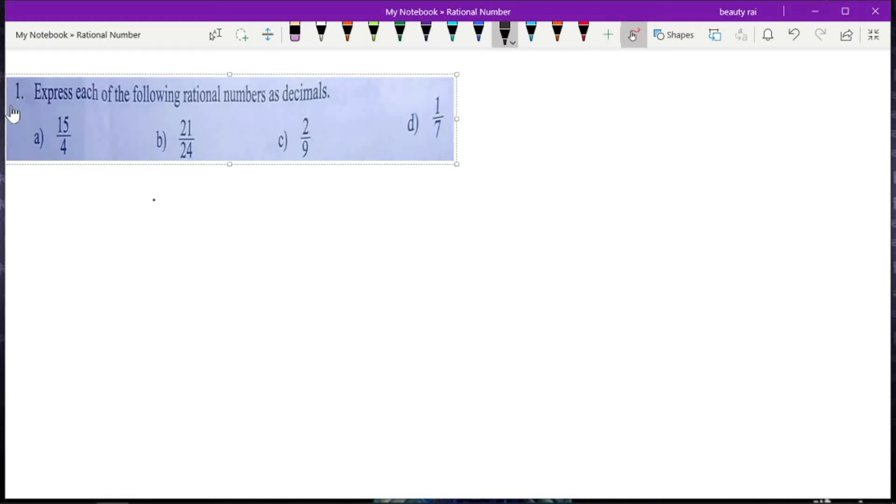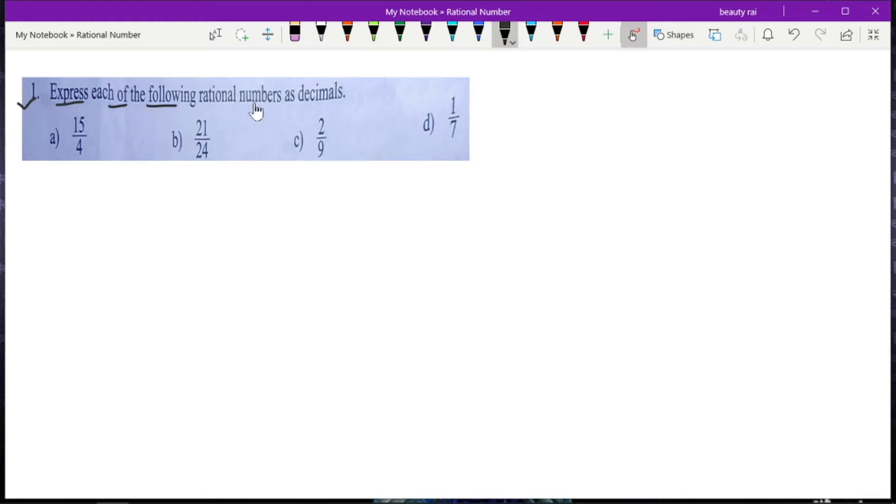Now we are going to start exercise 3.4, question number one: express each of the following rational numbers as decimals. Here you are provided with some rational numbers and you have to write these rational numbers as decimals, which means you have to convert the rational number into decimal form.